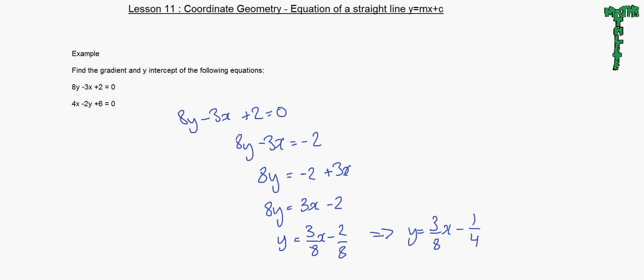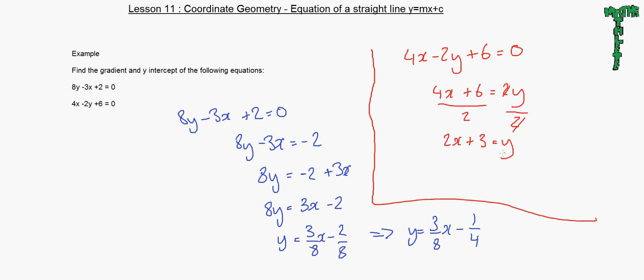For the second equation, let's write this here. 4x minus 2y plus 6 equals 0. So we'll keep the y on this side. Or in fact, if you want to be quicker, you can put the y on this side and everything else will be on this side. So 4x plus 6 equals 2y. Divide both sides by 2. So divide this by 2 and this by 2. These 2s cancel out. This becomes 2x plus 3 equals y.